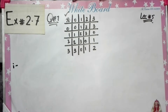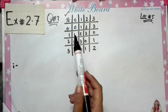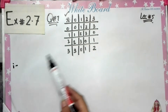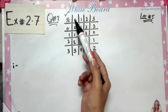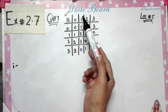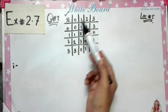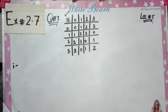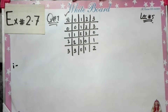First of all, let's see the values: 0*0=0, 0*1=1, 0*2=2. It is clear that the operation used here is addition. The reason is that you add any value.